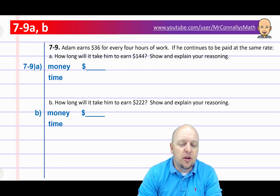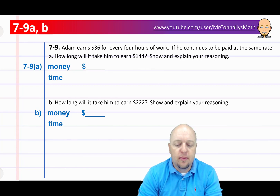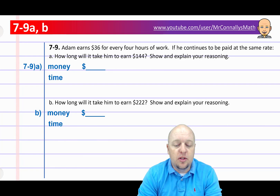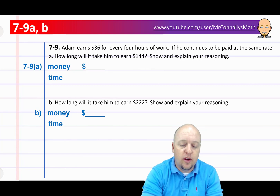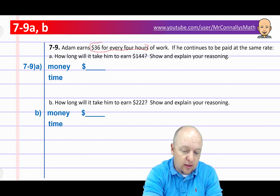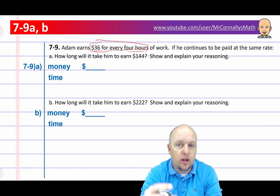Question 7.9: Adam earns $36 for every 4 hours of work. If he continues to be paid at the same rate, how long will it take him to earn $144? Show and explain. So let's go back to the beginning — we've got $36 for every 4 hours. Let's highlight that. That's very important.